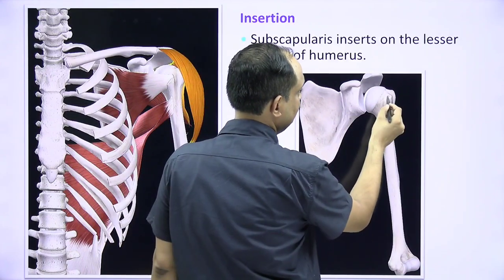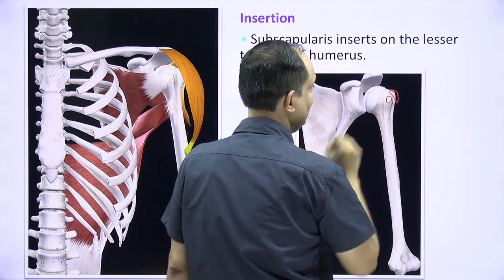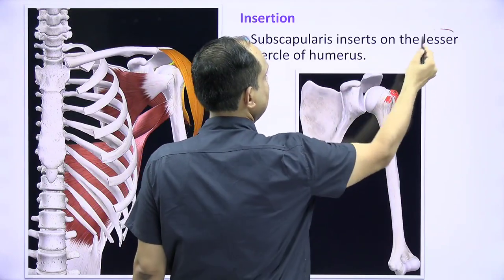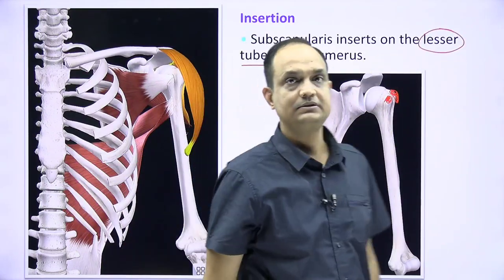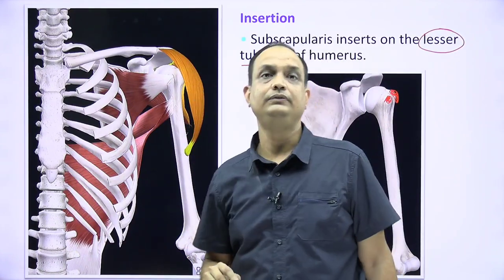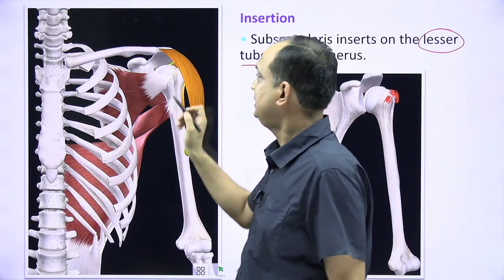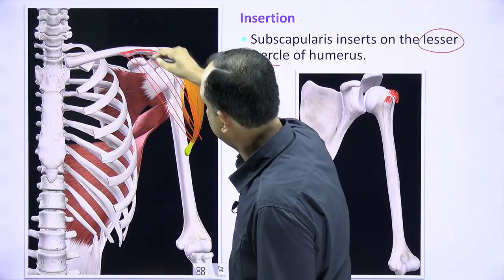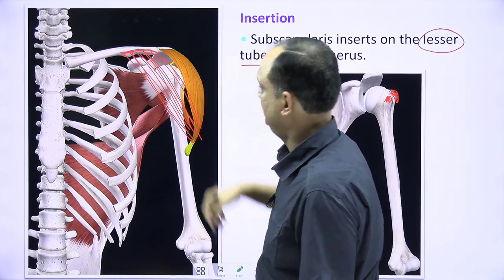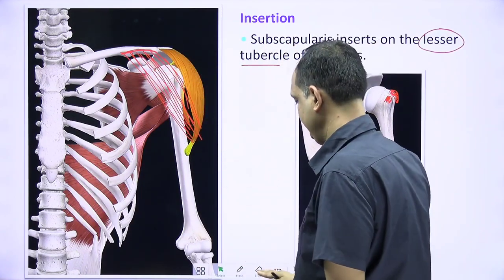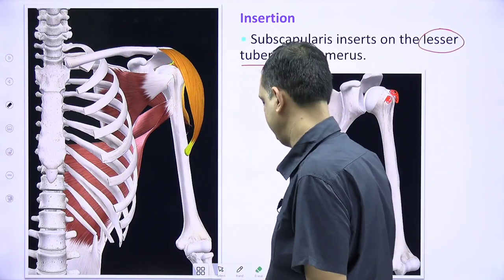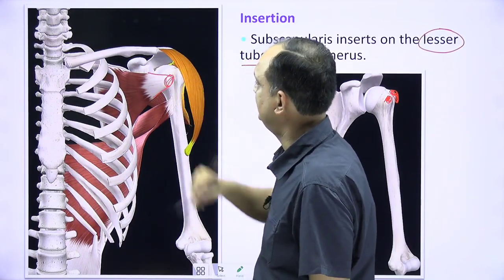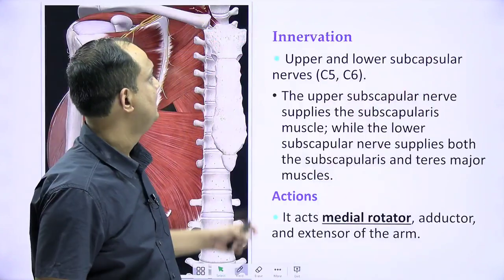The insertion of subscapularis is on the lesser tubercle of the humerus. On the humerus there are two projections: the lesser tubercle medially and the larger greater tubercle laterally. Subscapularis inserts on the lesser tubercle. This lesser tubercle is not visible until you cut the clavicular fibers of the deltoid; once you do, you can see the tendon of subscapularis inserting there.